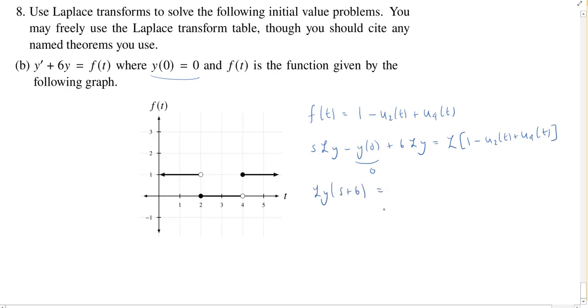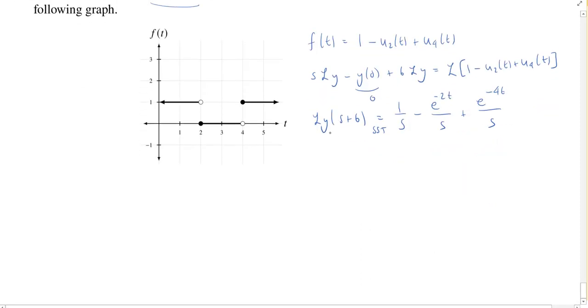So the Laplace transform of 1, that's easy enough. That's 1 over s. For u2(t), well, we're using the second shifting theorem here. So by the second shifting theorem, this is going to be minus e to the negative 2s over s. And u4(t), this will be, now we have a plus e to the negative 4s over s. Well, at least everything's over s. That's not too bad.